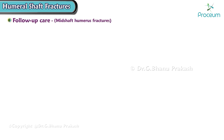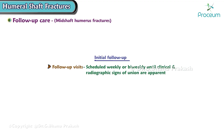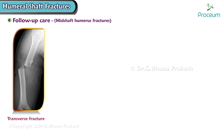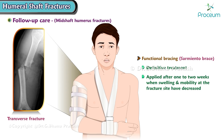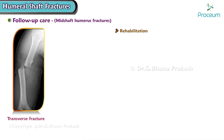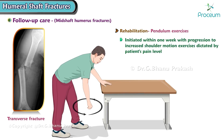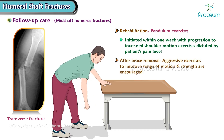Follow-up visits should be scheduled weekly or bi-weekly until clinical and radiographic signs of union are apparent, with the usual healing time between 10 to 14 weeks. A functional brace, like the Sarmiento brace, is the definitive treatment for transverse humerus shaft fractures and most other mid-shaft fractures, applicable after one to two weeks when swelling and mobility at the fracture site have decreased. Pendulum exercises can be initiated within one week, progressing to increased shoulder motion exercises based on the patient's pain level. After brace removal, aggressive exercises to improve range of motion and strength are encouraged.